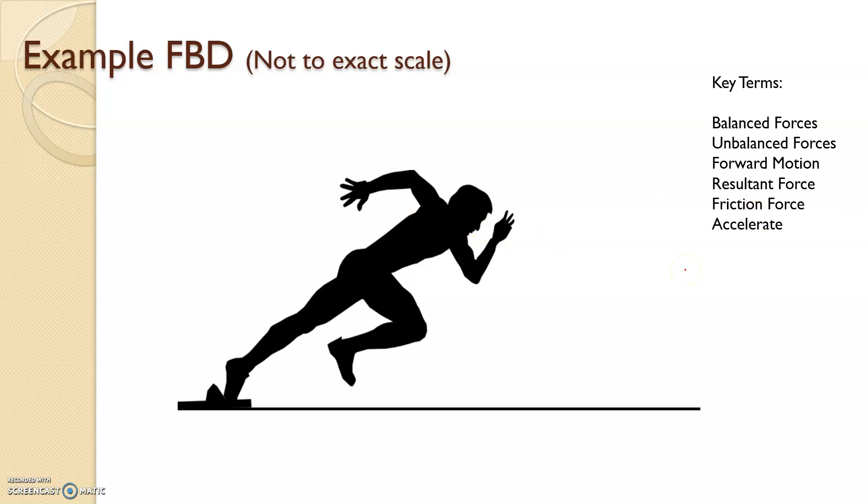So balanced forces, unbalanced forces. We can tell already it's the start of a sprint, so it's going to be an unbalanced force unless they're frozen in time. Forward motion, resulting force, friction force, accelerate. First of all, we have to start with the line of gravity from the centre of mass.